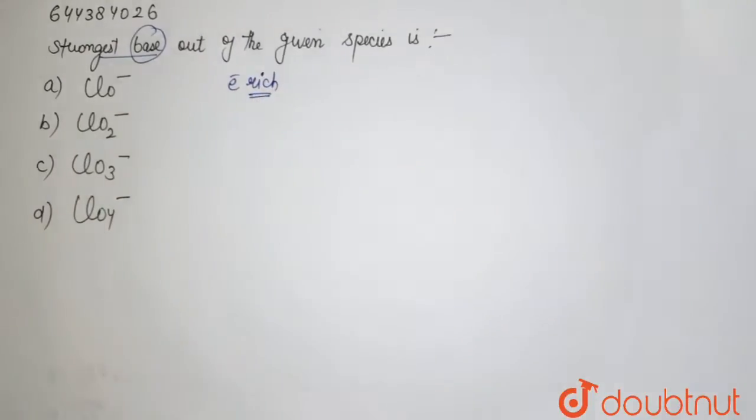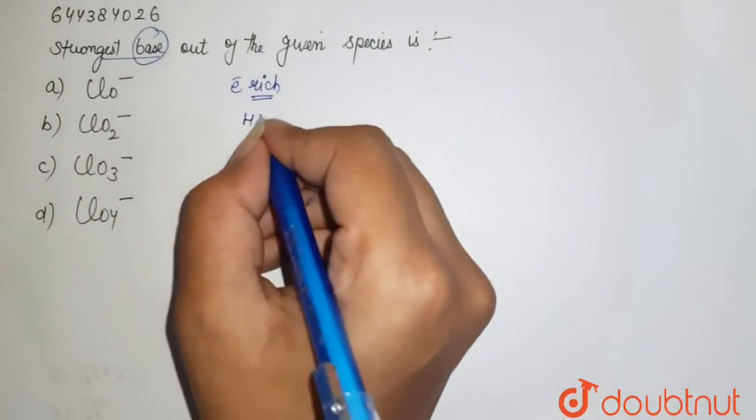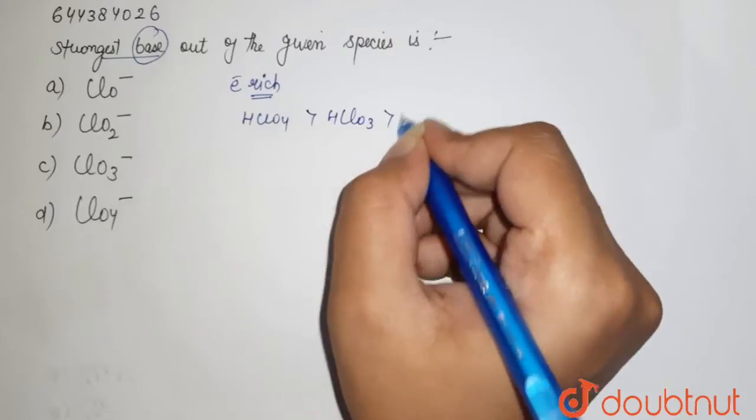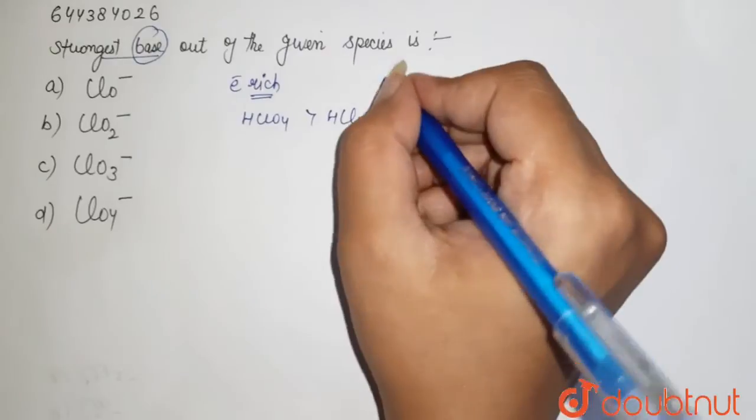If I see the acidic strength of these chlorate acids, that is your HClO4, HClO3, HClO2, and here it is HClO. Why am I doing so? Because your acidic strength...